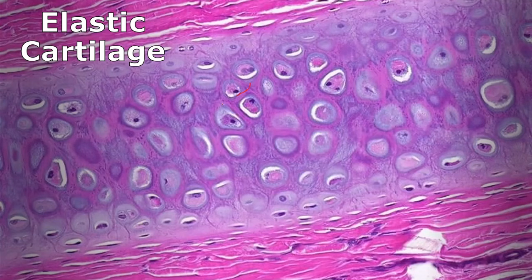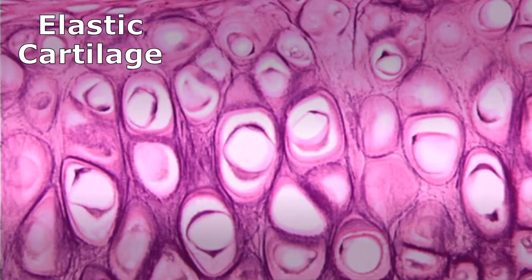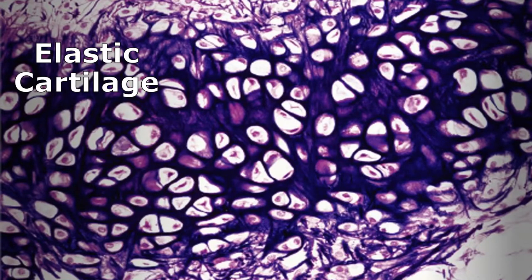In these additional elastic cartilage images, I can see chondrocytes in lacunae. The matrix may look smooth at first but look closer — there are lots of cracks in the glass, dirty matrix. The key is looking at the matrix to determine the type of cartilage. The dark staining and black cracked matrix in the background confirms we're looking at elastic cartilage.